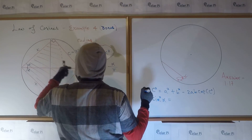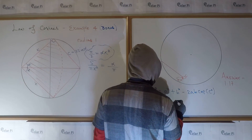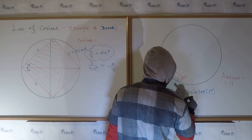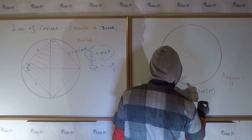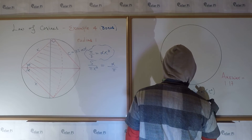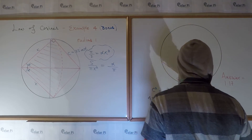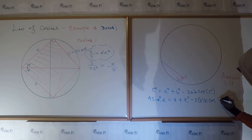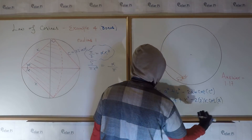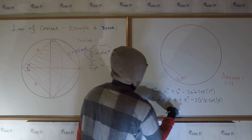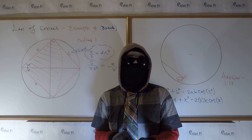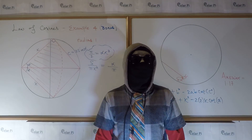The angle here is alpha, and side c is two sine alpha, so four sine squared alpha equals four plus x squared minus two times two times x times cosine of alpha. That's our second equation in x and alpha. So if we take this equation together with the first equation, we can solve for alpha or x, and therefore we're done.